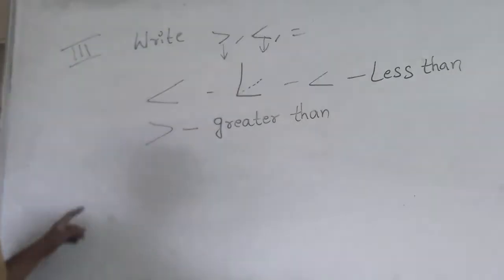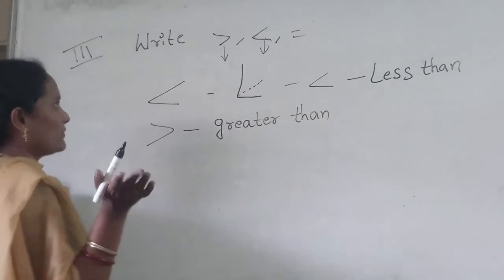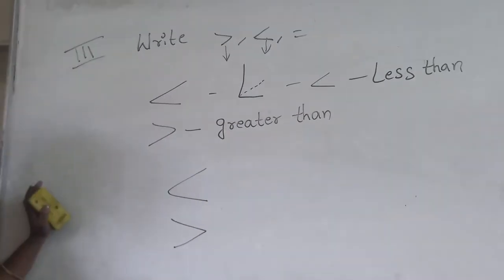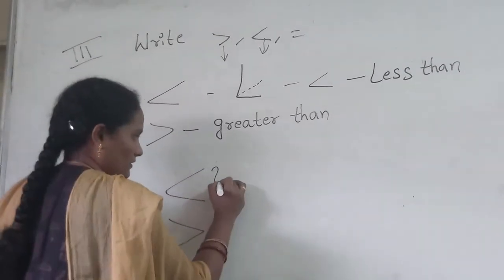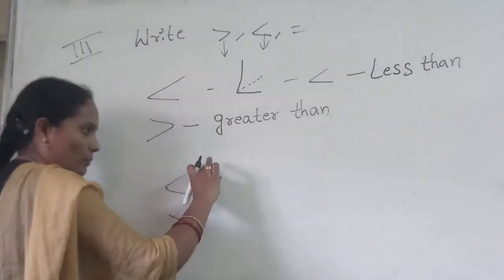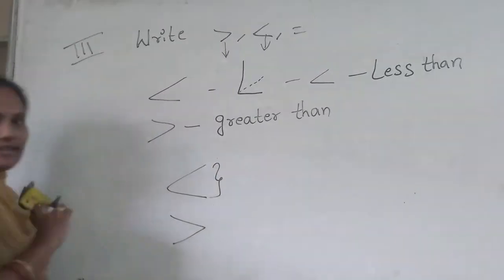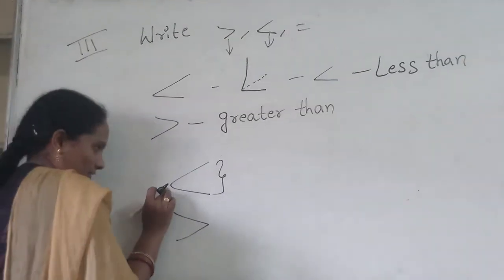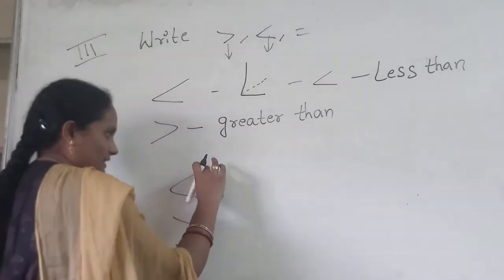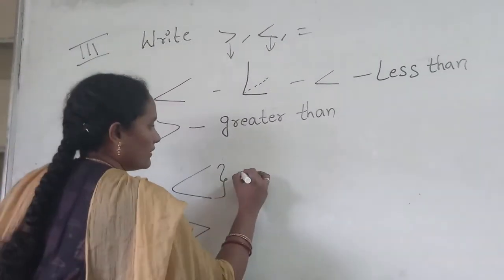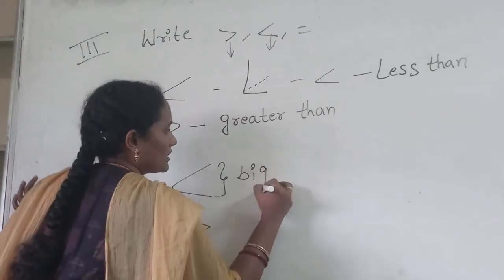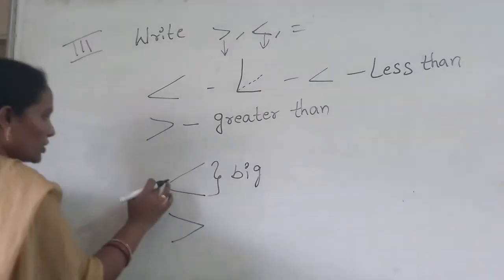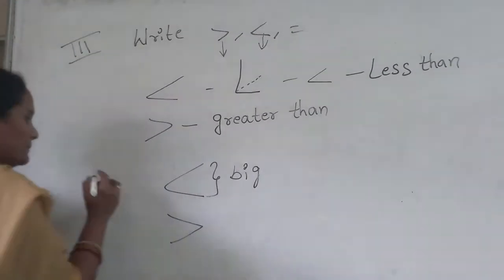Now I give some examples. Before I give examples, how do we use these symbols? In my way of thinking: this is an opening sign and this is a closing sign. The opening sign always comes with the big numbers. The closing sign always comes with the small numbers.